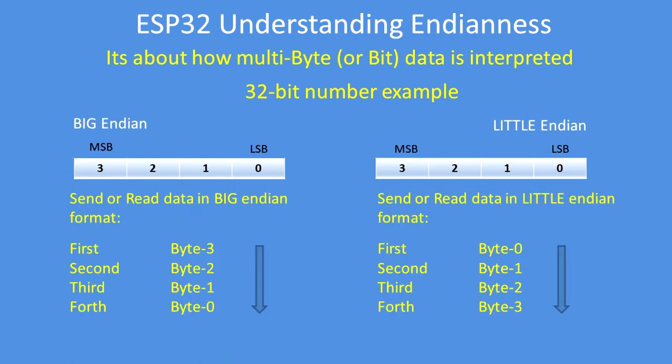Here's how you would send Big Endian data: on the left, you send the most significant byte first — byte three, then two, then one, then zero. If you're sending Little Endian data on the right, you'd send byte zero, then byte one, then byte two, then byte three. The same applies when processing data — Little Endian processes byte zero first, and Big Endian processes byte three first. It's a fairly simple concept but it can be confusing.